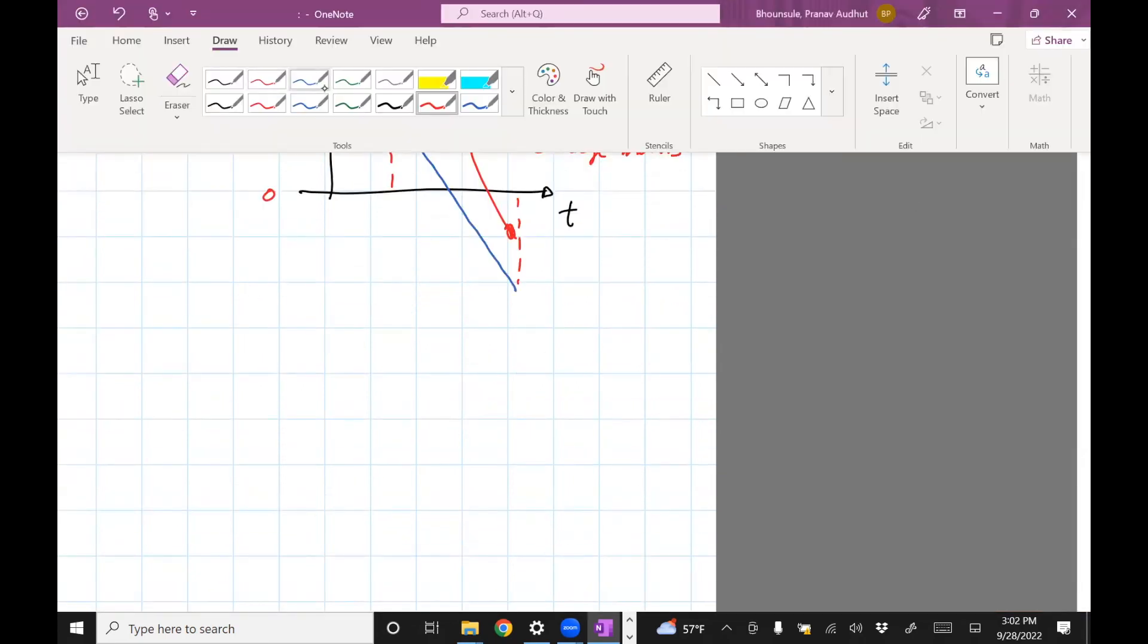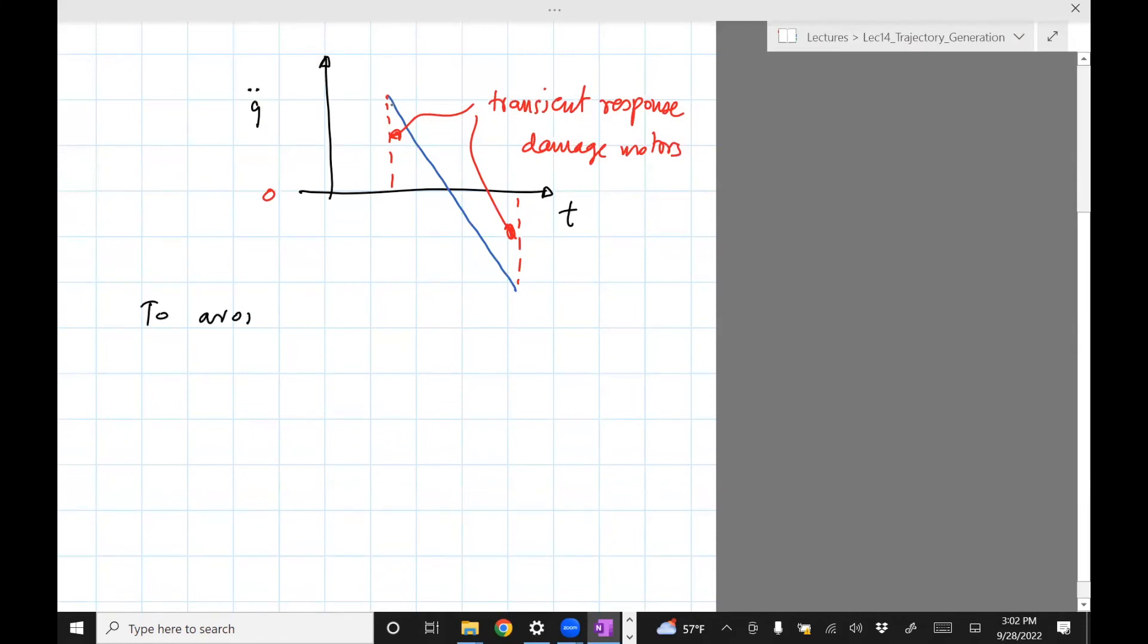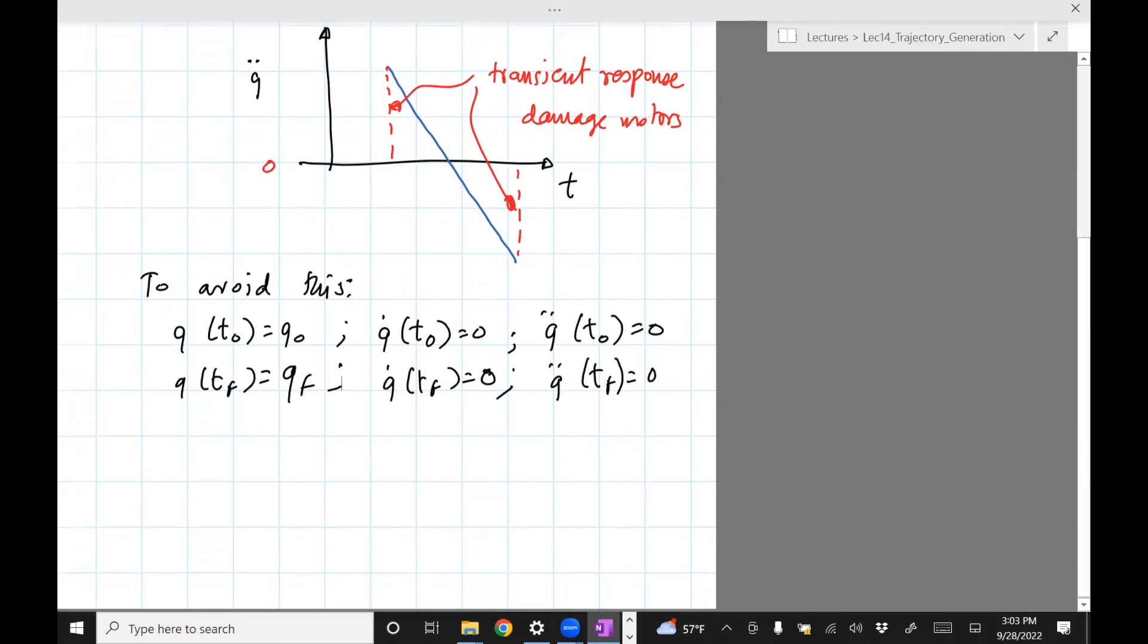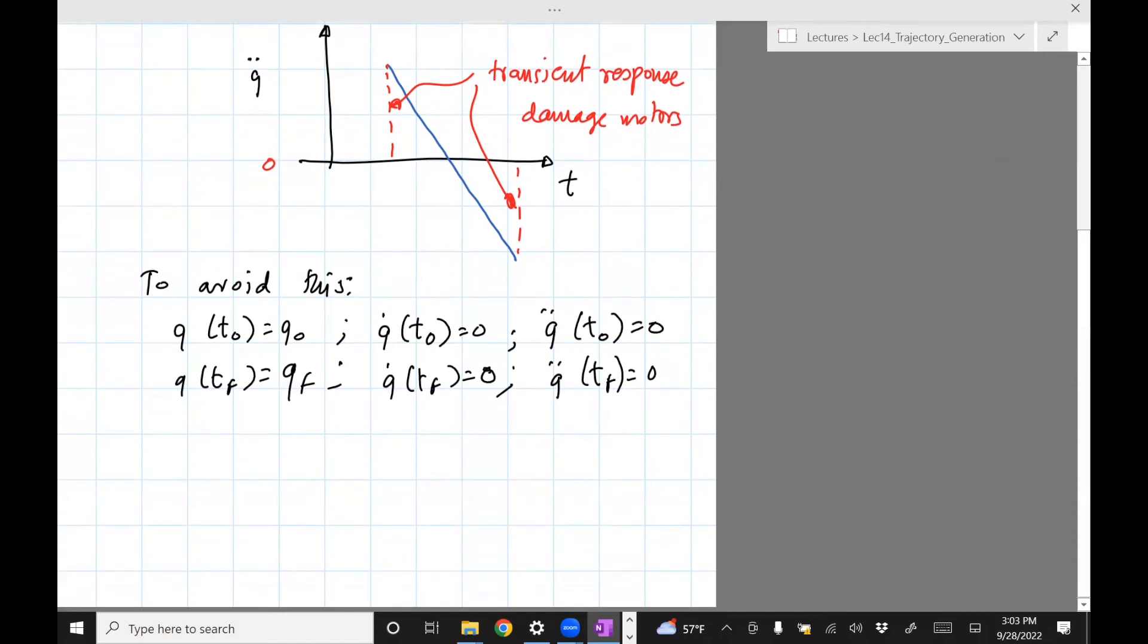Okay, so how do you avoid this? So what you do is you specify q at t0, q at tf which is qf, that's given, that we already had in the first case. We specify the velocity. Initial velocity is zero. Final velocity is zero. And to avoid this issue of transient response in acceleration, we specify q double dot at t0 is zero and q double dot at tf is zero. Okay, so now we have not four but six conditions.